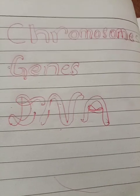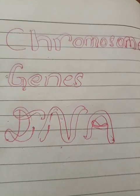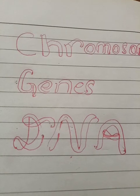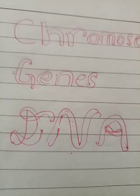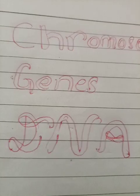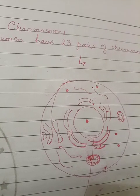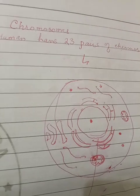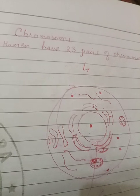Assalamu alaikum. Today we will learn about the basics of genetics — what are chromosomes, genes, and DNA. As we know, human beings have 23 pairs of chromosomes, meaning they have 46 chromosomes in total.